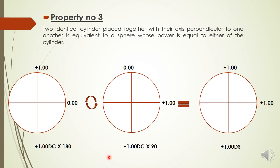When you keep two identical cylinders with axes perpendicular, they add up and produce a spherical lens. Plus 1 and plus 1 perpendicular give you a plus 1 spherical. This can be helpful when a particular spherical lens is not available — instead of combining two spherical lenses, you can take two cylindrical lenses of the same power, keep them perpendicular, and that makes a spherical power. For example, minus 3 at 180 and minus 3 at 90 gives a minus 3 diopter spherical lens.